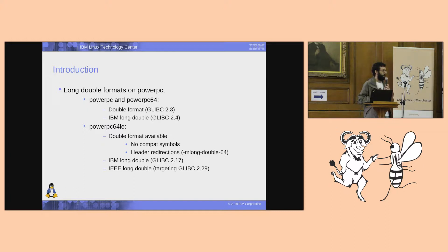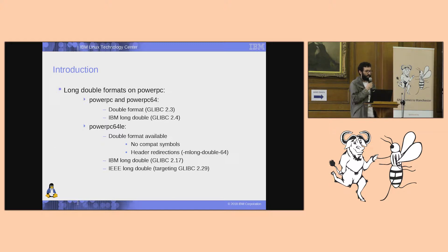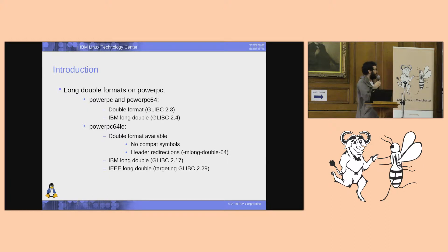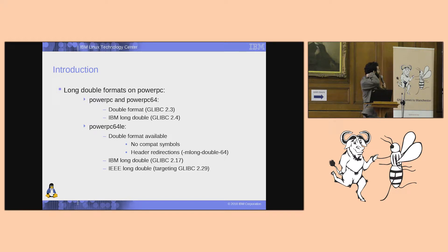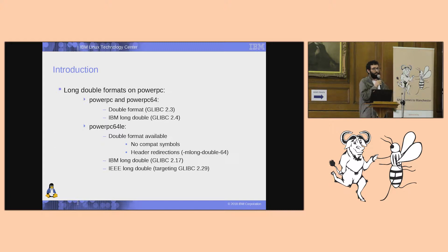If you open the shared libraries on machines that have new enough Glibc, it's going to show that you have two symbols for many functions — for all the functions that deal with long double type. On PowerPC 64-bit little-endian, which came about at the time of Glibc 2.17, even though the 64-bit little-endian version also has the double-double long double format available, it doesn't have the same compact symbols found in the 32-bit and big-endian 64-bit versions, but the support is available.